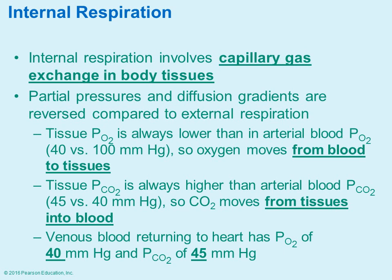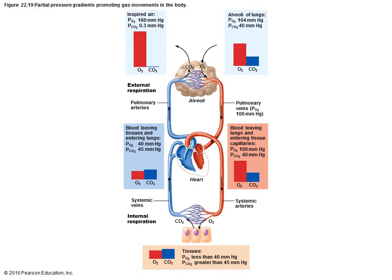Internal respiration involves the exchange between the blood and the rest of the body tissues, and once again it's going to be controlled by pressure changes. At the tissue level, oxygen is flowing out of the blood into the tissues, and carbon dioxide is flowing out of the tissues and into the blood.